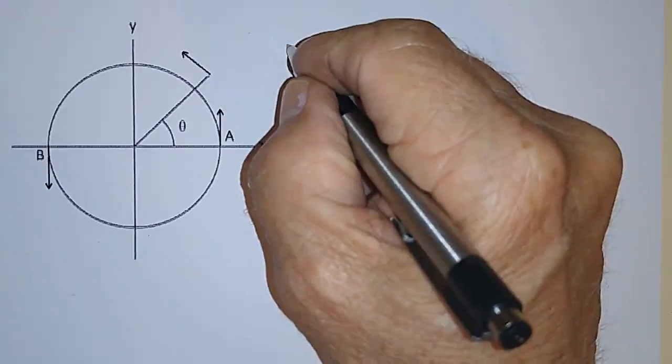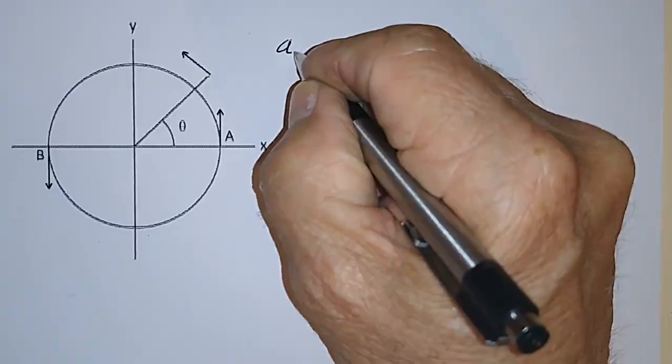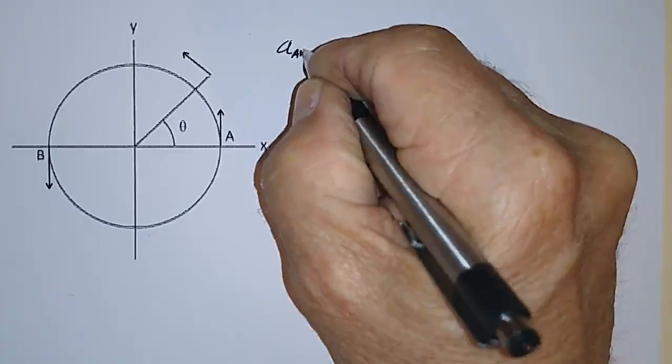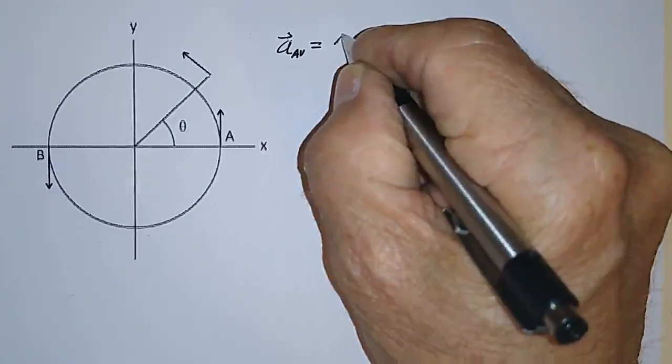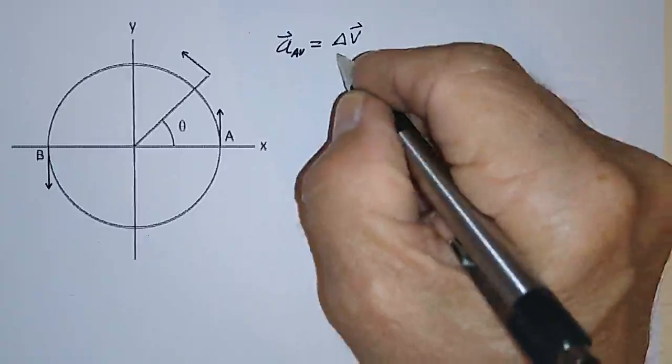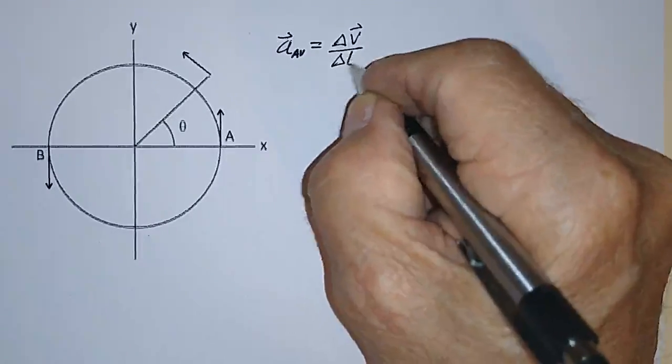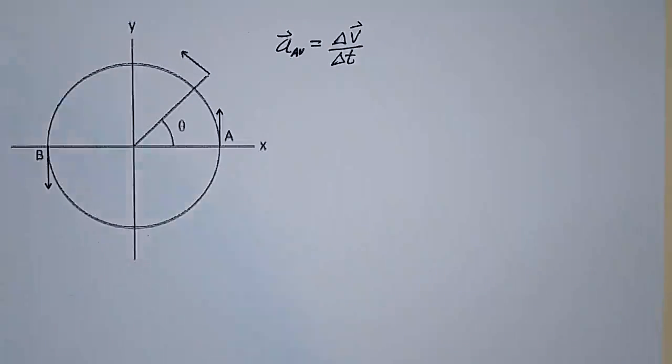The way to work this is to define the average acceleration as just delta V over delta T.